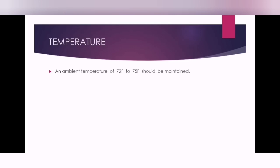The ambient temperature that should be maintained in the isolation room is 72 to 75 degrees Fahrenheit, which is the recommended temperature for coronavirus patients.